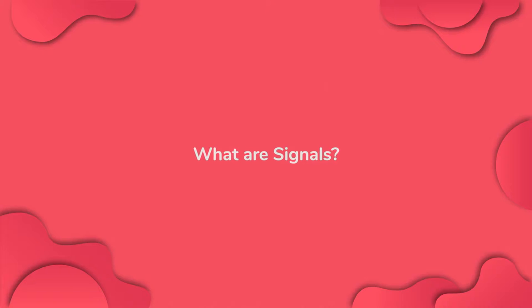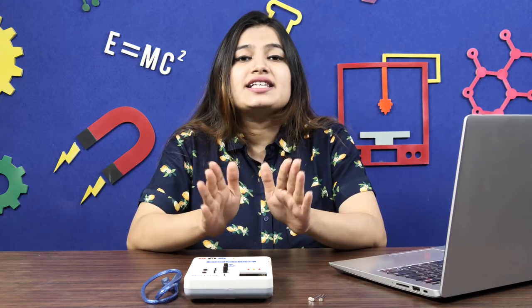But before we move ahead, let's talk a little about signals. A signal is anything that carries some sort of information. It can be an action, a sound, or any type of movement. Any signal can be classified as an analog signal or as a digital signal.